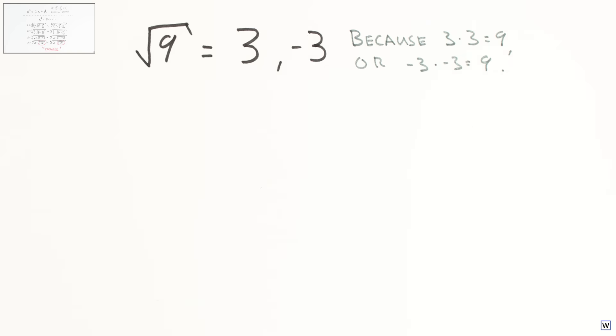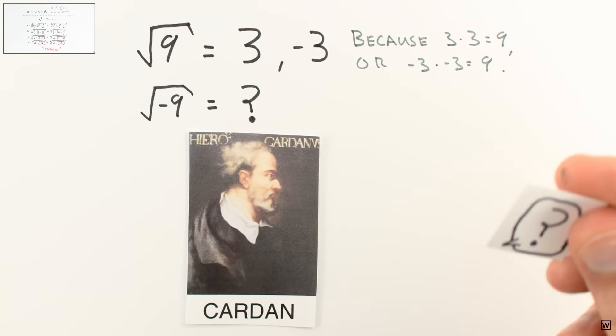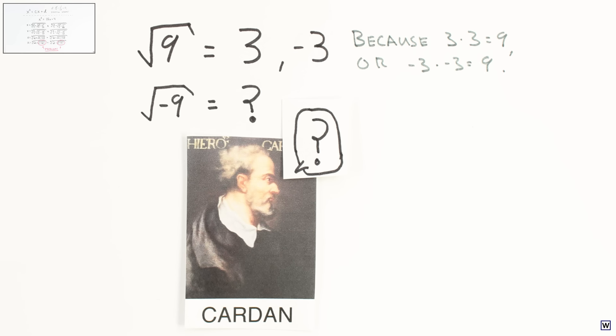But what about the roots of negative numbers? What is the square root of negative 9? Positive 3 won't work and neither will negative 3, so we're stuck. Cardan was stuck too. He didn't know of any numbers that, when multiplied by themselves, resulted in a negative.